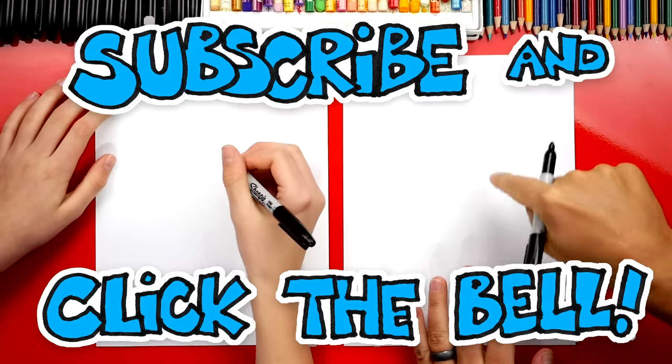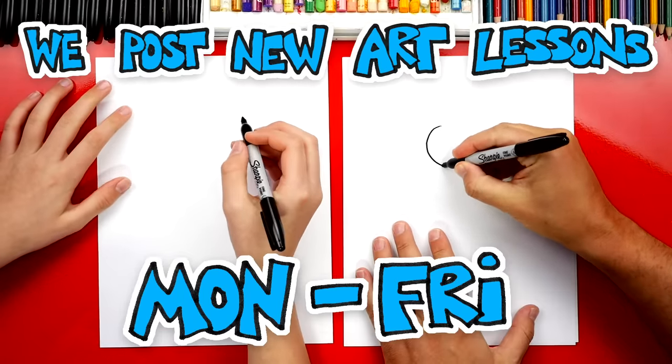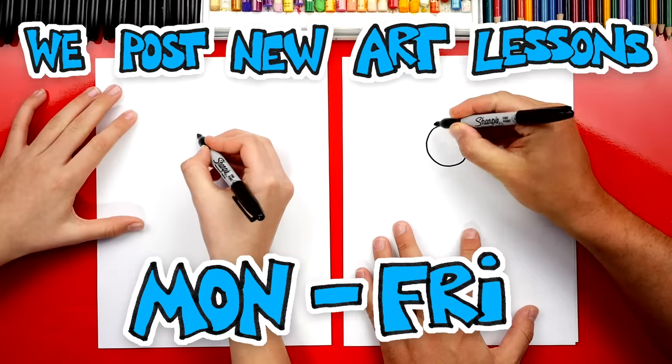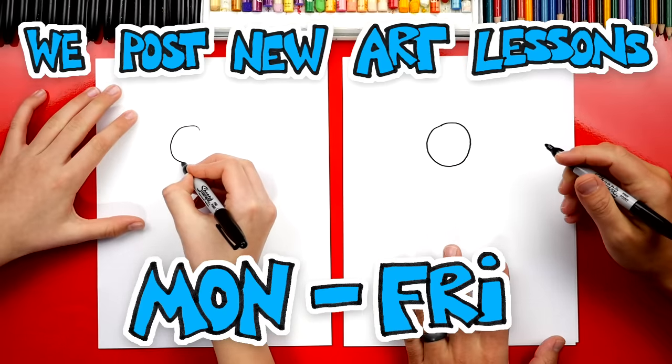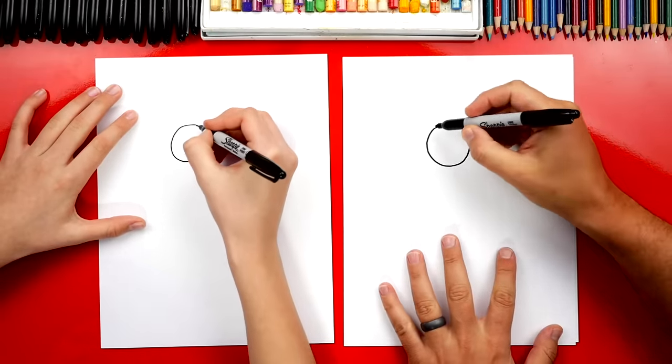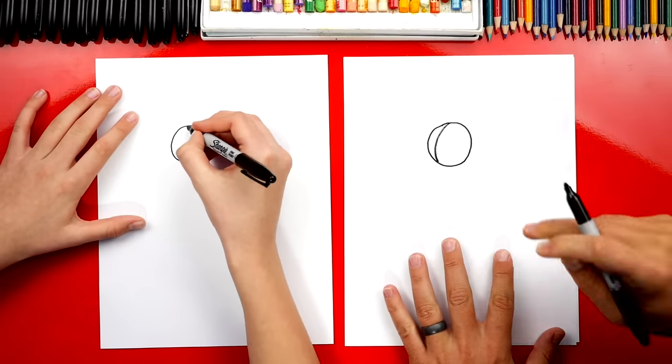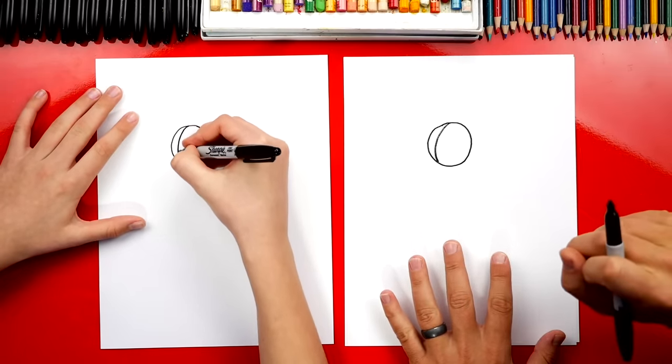And we're just gonna draw one rose first. We're gonna start up here and we're gonna draw a circle. We don't want to draw it too big because we need to draw a bunch of other roses. Now we're gonna draw a line inside like that. Now this is gonna be the petal, one of the petals.